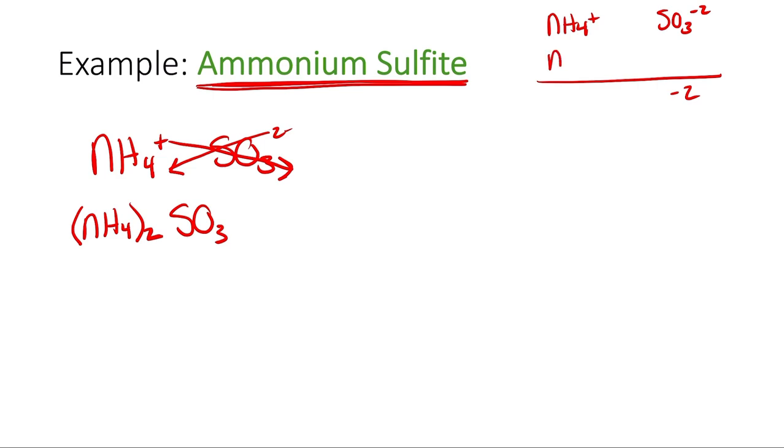If you're still confused about crisscrossing, all you need to do is balance the charges. Over here I've got a total of minus 2 charges. Right now I've got a total of plus 1 charges. If I add one more ammonium ion, I've got plus 2, that's going to equal 0. So the crisscross is just a quick and easy method of doing the same thing.